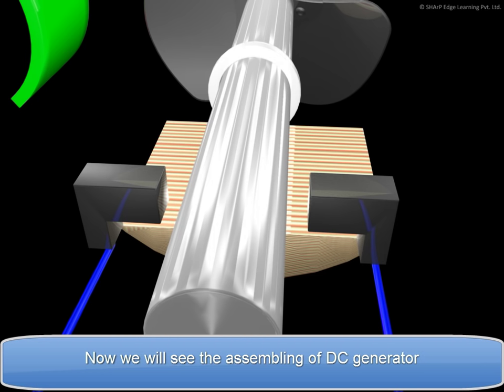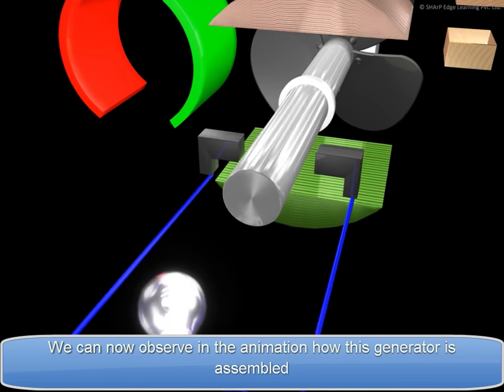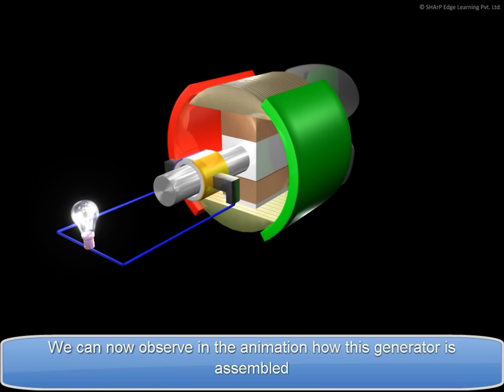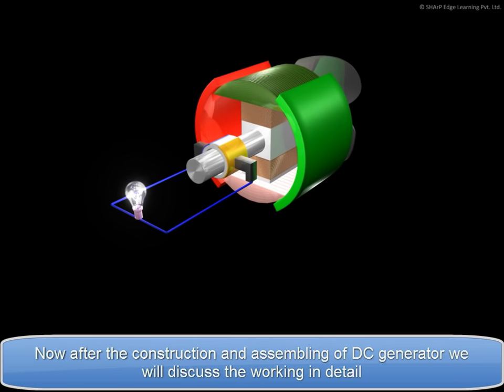Now, we will see the assembling of DC generator. We can now observe in the animation how this generator is assembled. Now, after the construction and assembling of DC generator, we will discuss the working in detail.